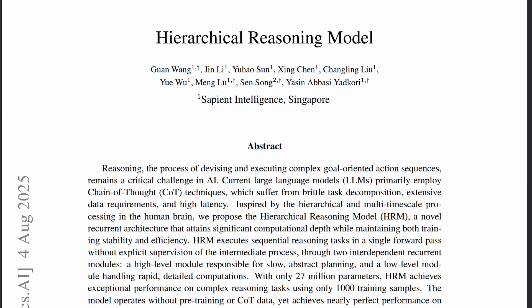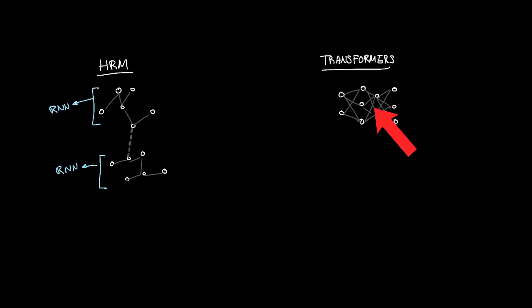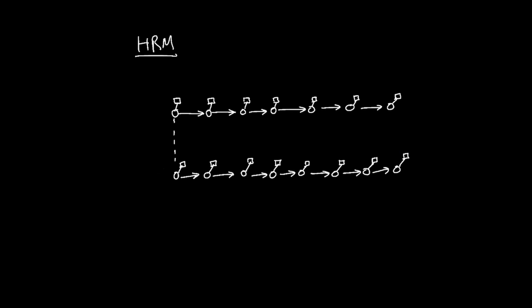So essentially, the core innovation behind HRM is its dual recurrent loop system instead of a classic transformer architecture that we see in commercial models like GPT-5, O3, Claude, and Gemini. These transformer-based models are designed to predict the next token based on the probability of the next word from the previous tokens, whereas HRM makes tokens based on two distinct recurrent neural networks.